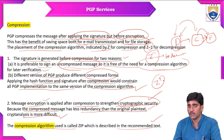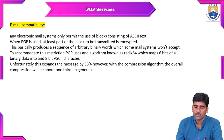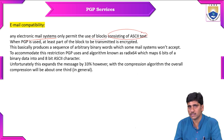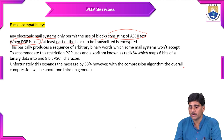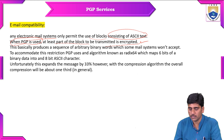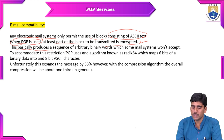For email compatibility, any electronic mail system only permits the use of blocks consisting of ASCII text. When PGP is used, at least part of the block to be transmitted is encrypted. This basically produces a sequence of arbitrary binary words which some mail systems won't accept.